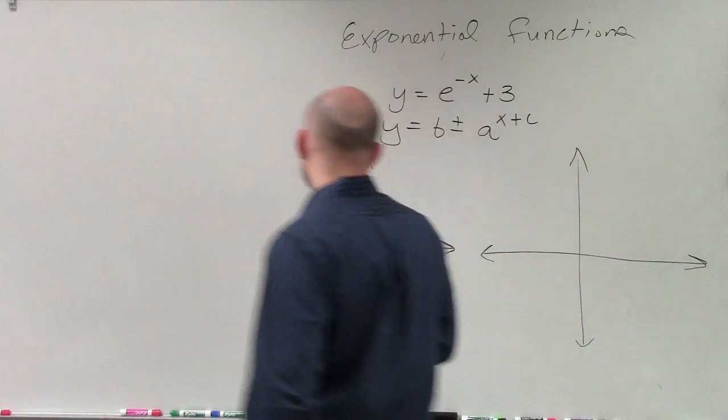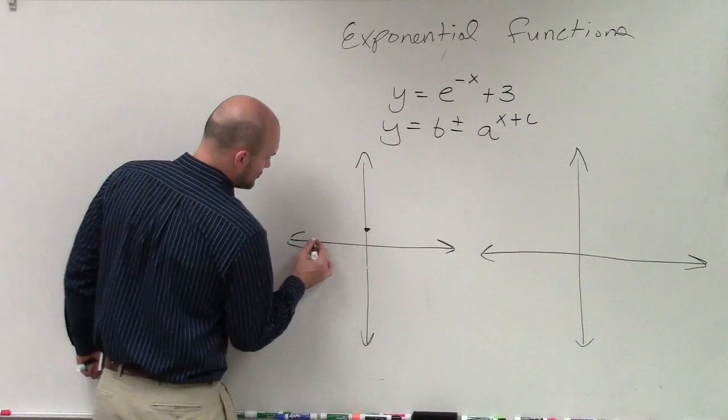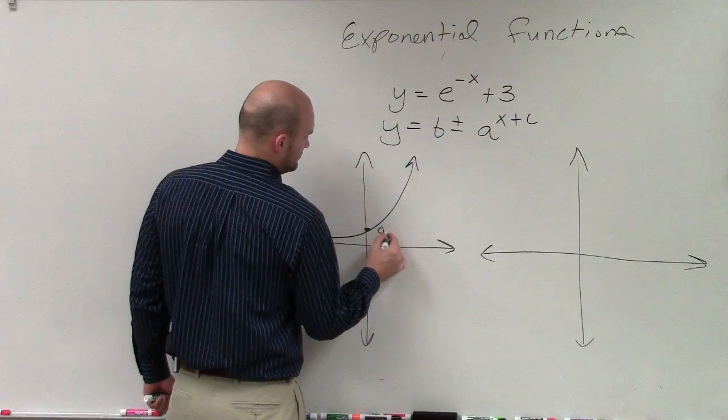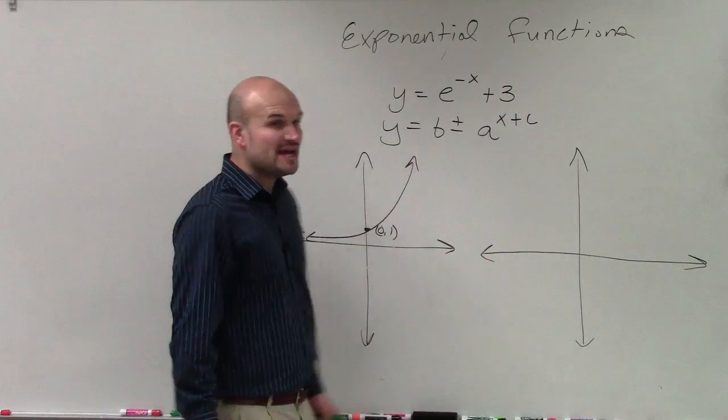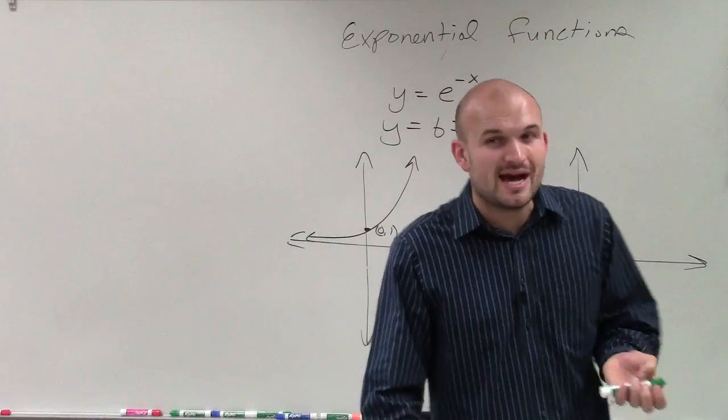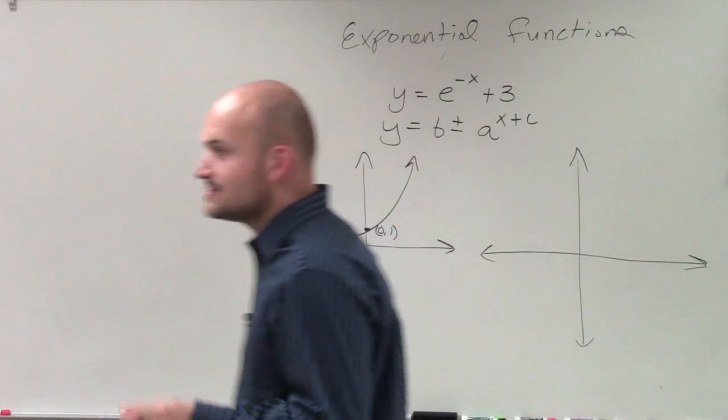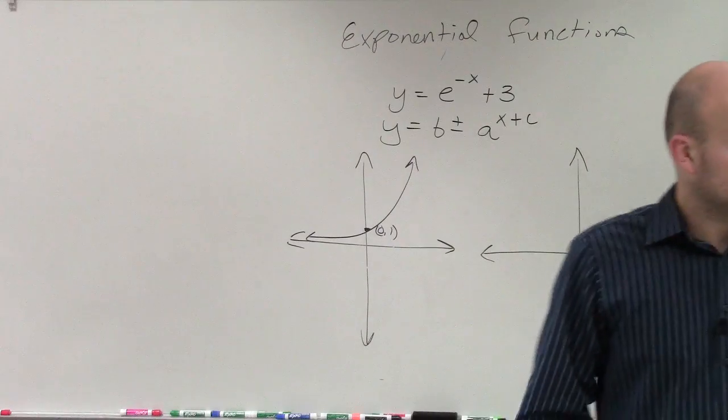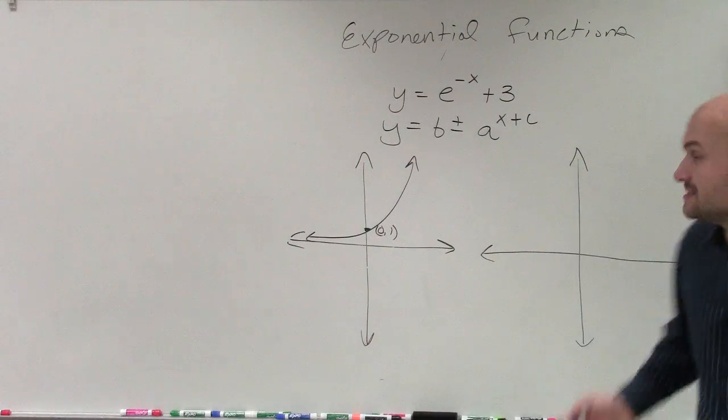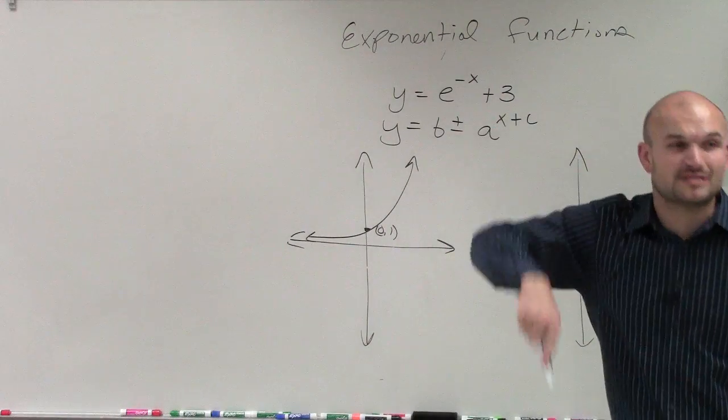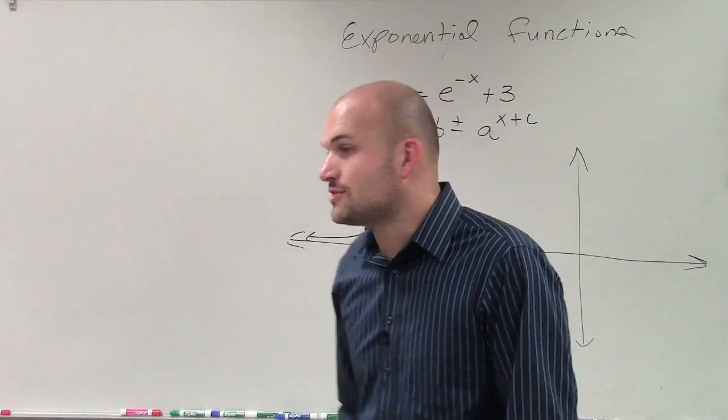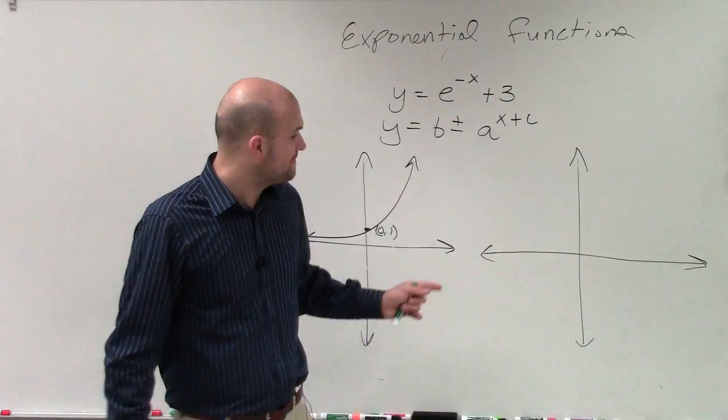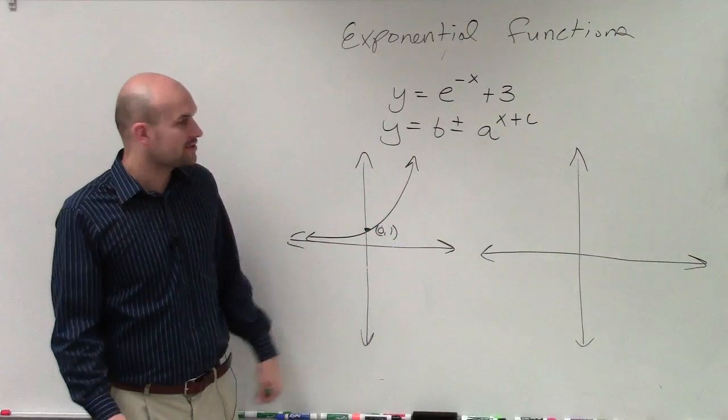So if you don't remember what the parent graph is, now would be a good time to remember what this graph looks like and to make sure that the one important point we have for all of our exponential functions is the y-intercept at 0 comma 1. Every single one. It doesn't matter what the base is. It doesn't matter if it's a base e. It doesn't matter if it's a base 10. It doesn't matter if it's a base 3 or 1 half. All the bases are still going to have a y-intercept at 0 comma 1.